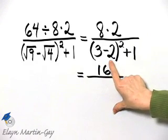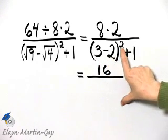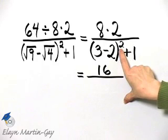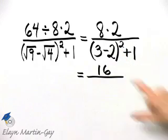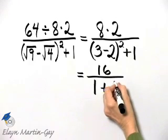3 minus 2 is 1. And what is 1 squared? 1 squared, that's 1 times 1, is 1. And then I still have plus 1.